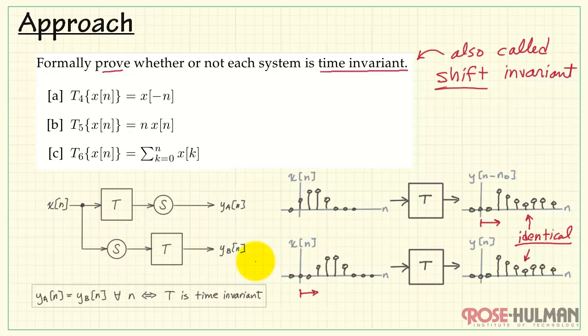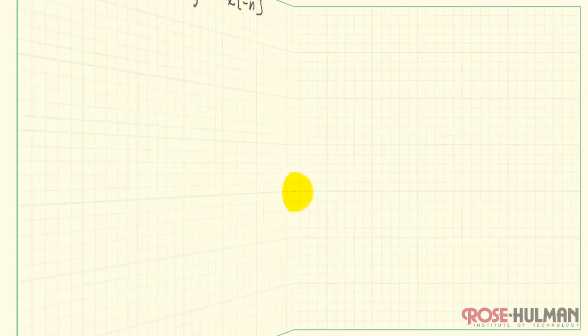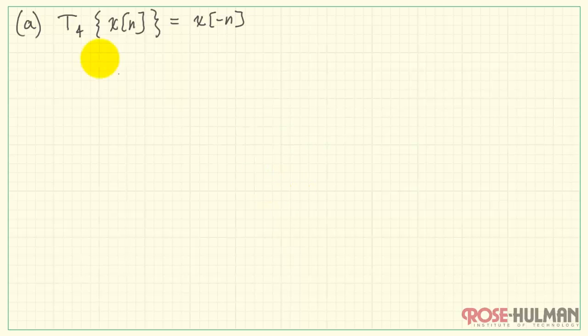Here's a proof structure to establish this case for system T. The top track represents the case of shifting the signal after processing. The bottom track represents the case of shifting before processing. If the post-shifted version and the pre-shifted version gives identical results for the output, then we say that the system is time invariant.